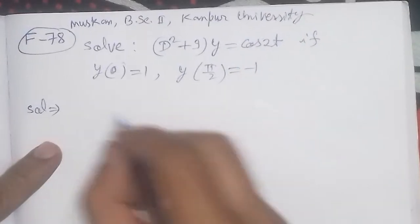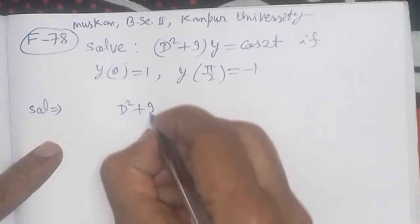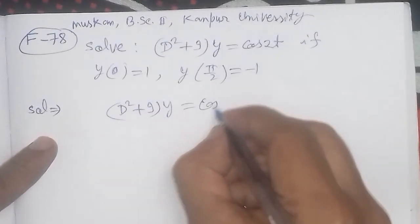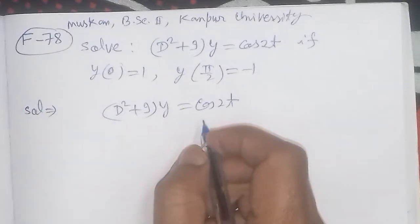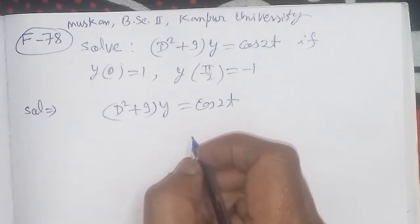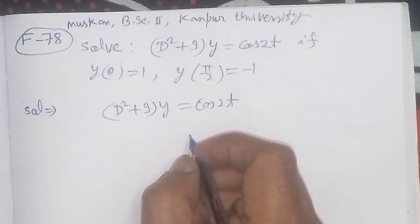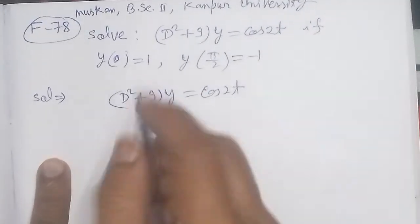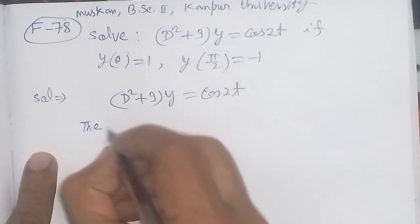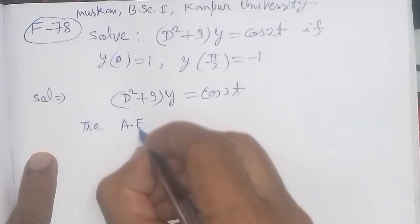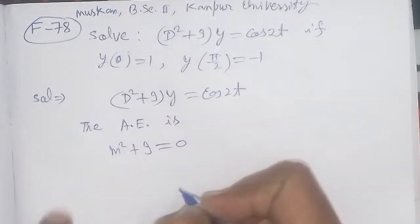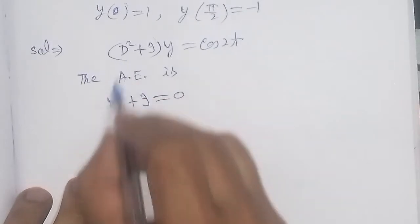First, we write this differential equation using operator notation: D² + 9y = cos(2t). To solve this, we need two parts: the complementary function and the particular integral. To find the complementary function, we write the auxiliary equation, where D is replaced by m and the right-hand side is 0.